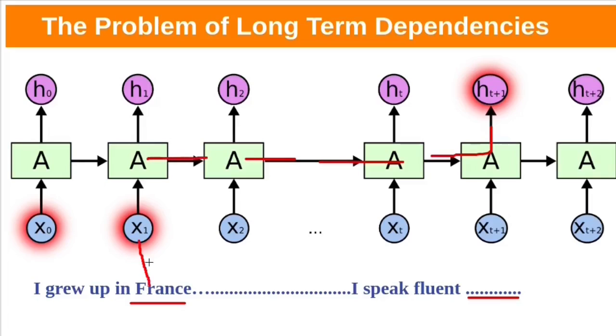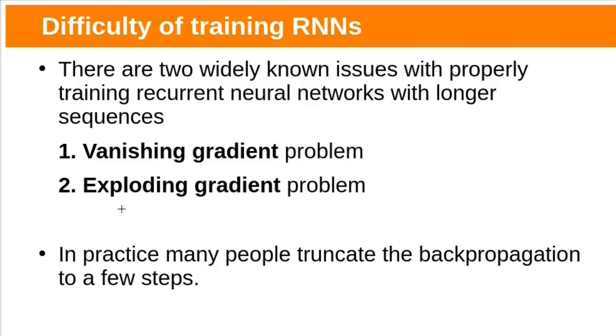Suppose this France comes at time step 1, the word we need to predict at time step 21. So we need to back propagate up to 20 time steps. There are two widely known issues with properly training RNNs with longer sequences by using back propagation through time, the vanishing and exploding gradient problems.